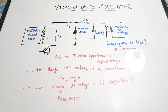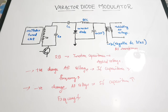The varactor diode is also mainly used for automatic frequency control and tuning purposes — for example, in the superheterodyne receiver. The main function of a varactor diode is frequency selectivity. For all frequency-related applications, the varactor diode can be used based on its property that when in reverse bias, its junction capacitance is directly proportional to the applied voltage, making it useful in tuning circuits.